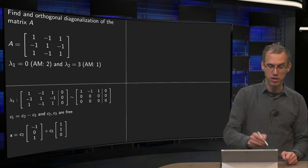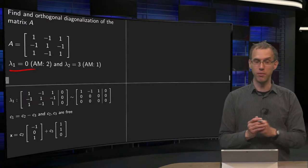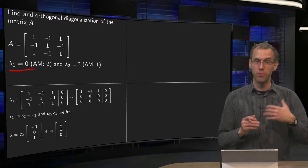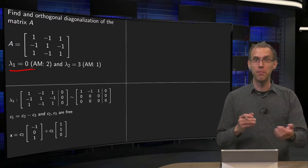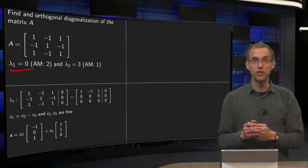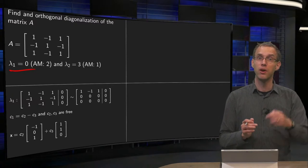So let us do the lambda equals 0 first, that's the tricky one. So we want to find the base for the eigenspace, so we compute A minus lambda I3, which is of course just A now because lambda equals 0, augment with zeros.